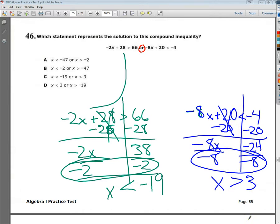So, I end up with x is greater than 3 or x is less than negative 19. Then I just go up and look for my answers. So, since I kept x on the left side, I can actually look exactly for the answer. And the answer to number 46 is C.